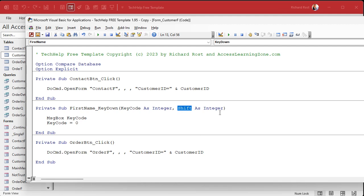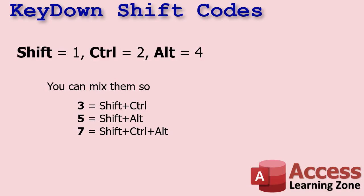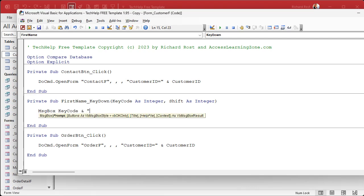The shift parameter gets a value indicating whether the shift, control, and/or alt keys are pressed. If just the shift key is pressed, that value comes in as 1. If just control is pressed, it's 2. If just alt is pressed, it's 4. And you can mix and match them: 3 means shift and control, 5 means shift and alt, 7 is all three. Control+alt would be 6, and so on.